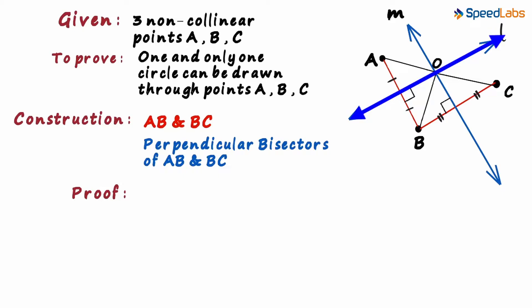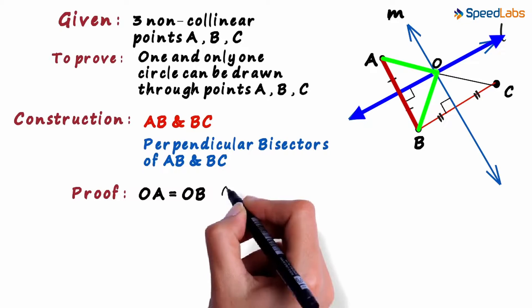We know that line L is the perpendicular bisector of AB. And since point O lies on line L, OA will be equal to OB by the perpendicular bisector theorem. Let this be our first equation.